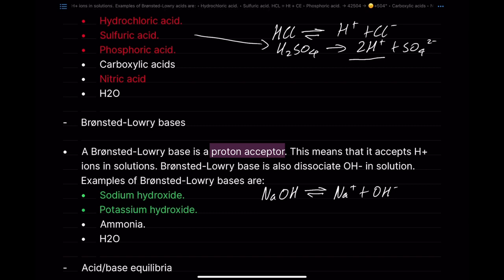For a triprotic acid, you can see phosphoric acid H3PO4 follows the same theme. Sodium hydroxide is monobasic because it dissociates one hydroxide ion. Magnesium hydroxide is dibasic as it dissociates two hydroxide ions. Understanding this is important for calculating pH, since if you have a diprotic or dibasic compound, that affects your concentration of H+, meaning you'd essentially double it.